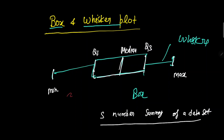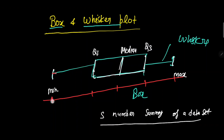Now we can interpret all these five points. Looking at the minimum point of the box plot, we can say that all the points of our data set lie above this point. And looking at the maximum point, all the data points lie below this maximum point.